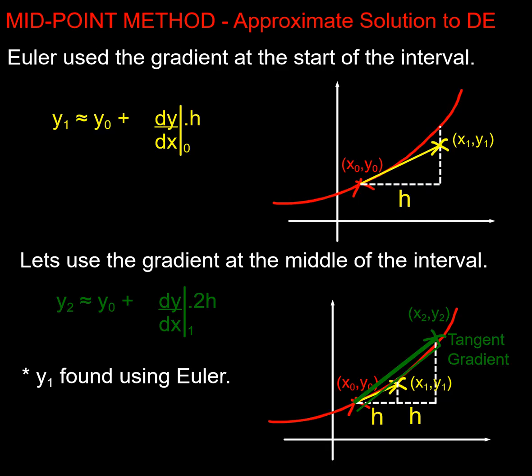We could start thinking about using the midpoint gradient. So this is Euler's approach: we take the gradient from this point here, our base point, and we apply it going up so we get an underestimate in terms of y. But what we could do is it might be better if we took the average gradient along this line, and we do that by going to a midpoint here.